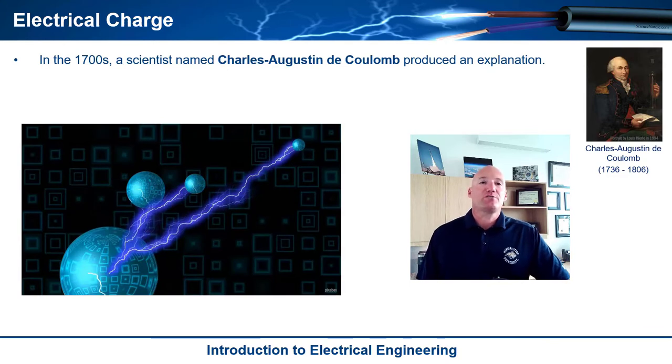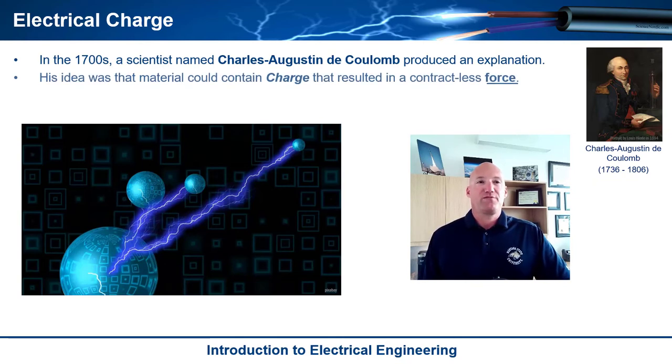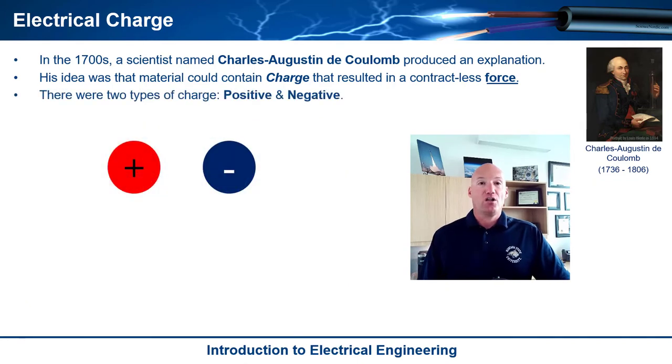So in the 1700s, there was a scientist that was named Charles Augustin de Coulomb. And he came up with an explanation for what was happening with this phenomenon. So he came up with this idea of charge. And he said that a material could contain this property called charge, and it would result in a contactless force. So contactless means you don't have to touch it. This is kind of like gravity or magnets, but this is a new type of contactless force. And it was due to this thing called charge.